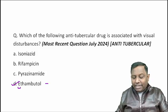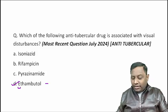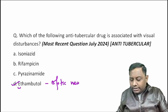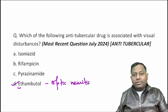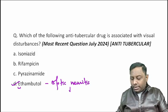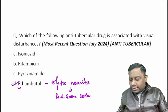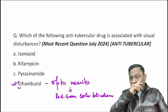Ethambutol causes an eye-related side effect. This eye-related side effect causes optic neuritis, and because of that there will be red-green color blindness. So the correct answer for this question is ethambutol.